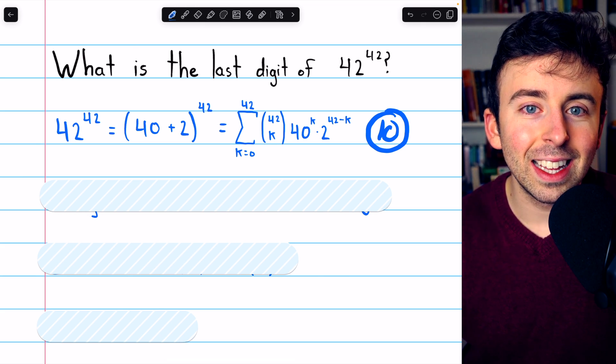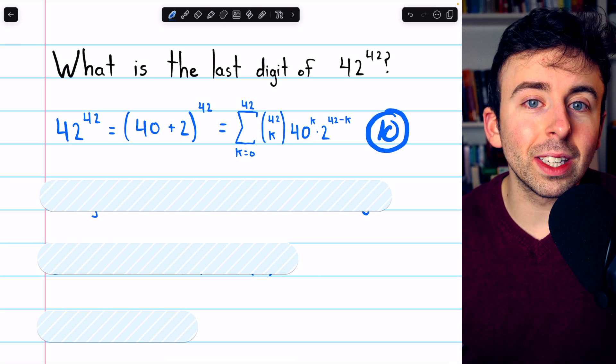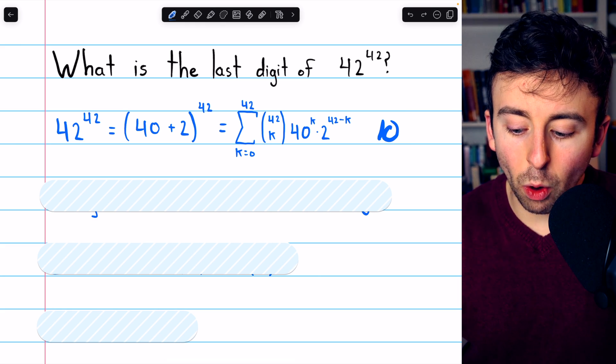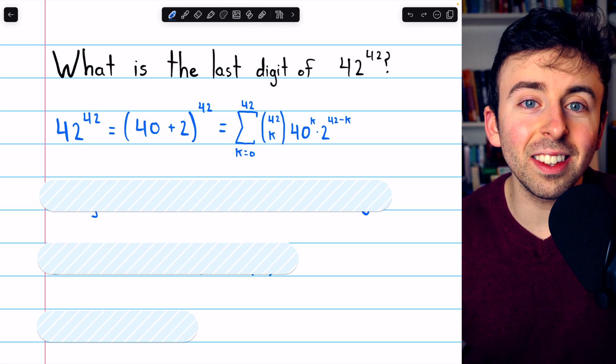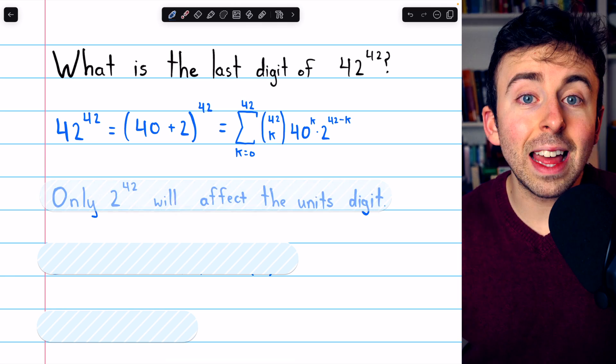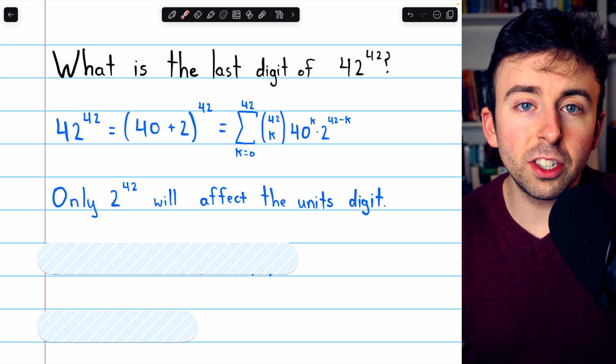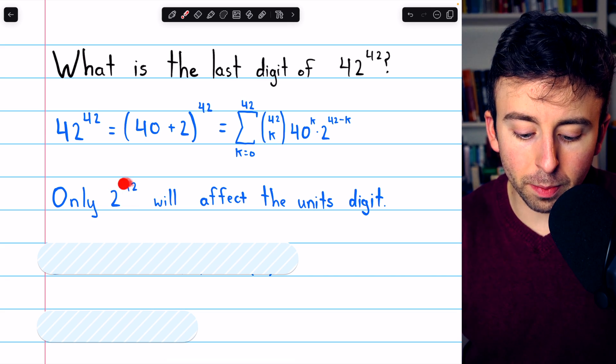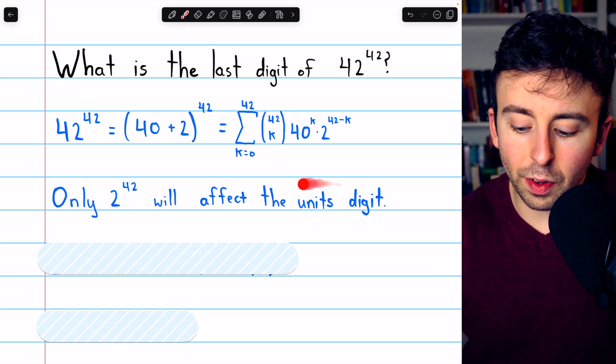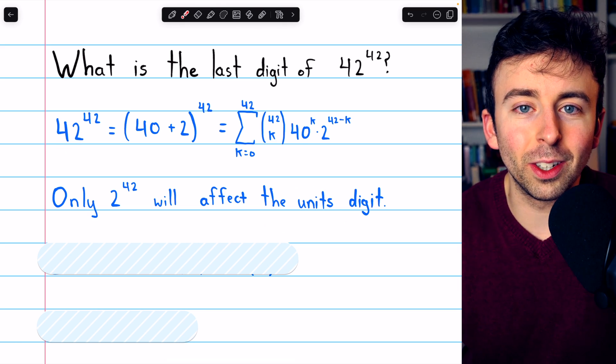So, in fact, the only term that's going to impact the unit's digit is going to be the first term that doesn't have a factor of 10. That first term, when k equals 0, is just 2 to the 42. So, only that first term, 2 to the 42, is going to affect the unit's digit of 42 to the 42.